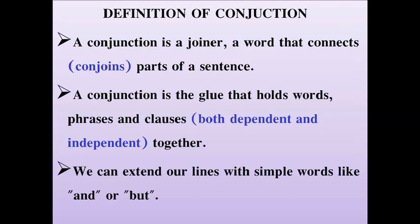First of all we will know about the definition of conjunction. A conjunction is a joiner — a word that connects and conjoins parts of a sentence. A conjunction is basically the glue that holds words, phrases, and clauses — both dependent and independent — together.